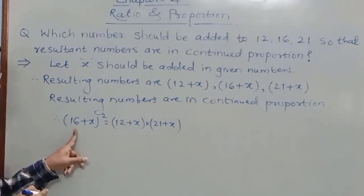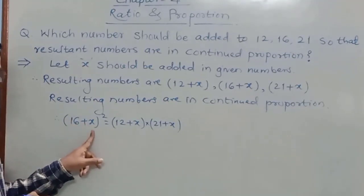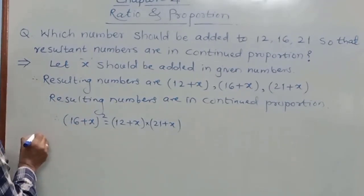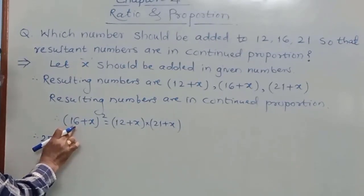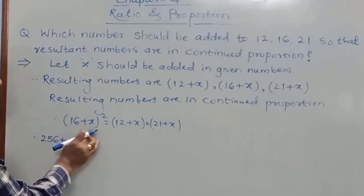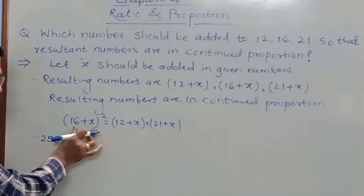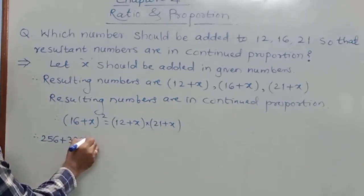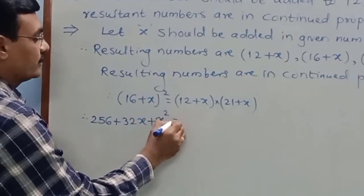We use the square expansion formula for the left-hand side bracket. 16 plus x, all squared, is in the form of (A plus B) squared. By using the expansion formula: A squared plus 2AB plus B squared, we get 256 plus 2 times 16 times x, which is 32x, plus x squared.